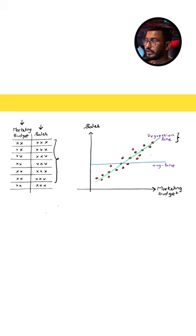If I wanted to understand how good this model is able to perform predictions, what we can do is compare the predictions made by this regression line with the average line. Now here we have the average line.